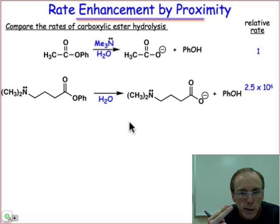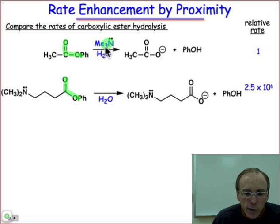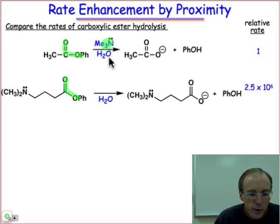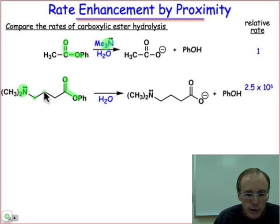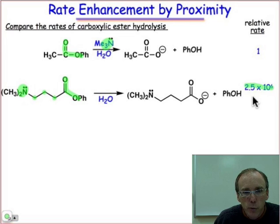Let's take a look at the effects of proximity, as illustrated by the first two reactions shown here. Both of these are hydrolysis of phenyl esters. In the first case, the catalyst trimethylamine is delivered intermolecularly. The reaction is run at some fixed concentration of this trimethylamino group under pseudo first order conditions, to compare relative rates to the reaction in which the amino group is bound covalently, tethered to the substrate four atoms away. In the second reaction, the hydrolysis proceeds more than a million times faster than in the first case.